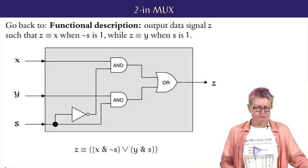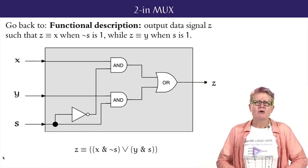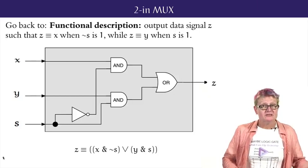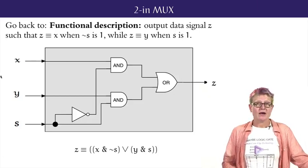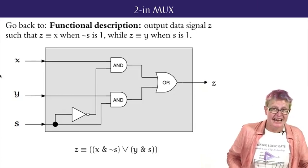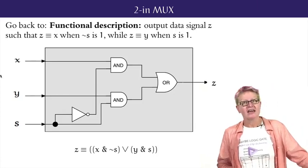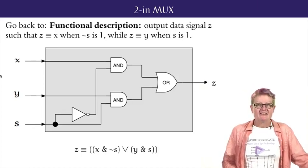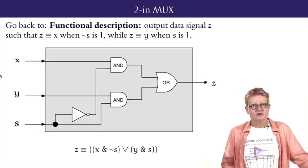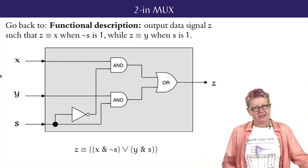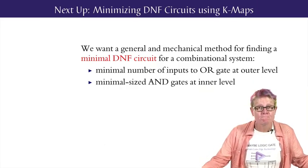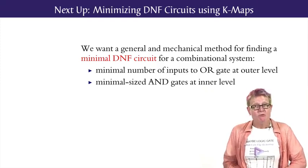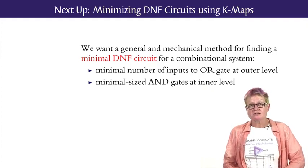Indeed, if we go back to the original functional description, it's easier to see the origins of this final minimal DNF for the 2-to-1 MUX system. Rephrasing the functional description, the output signal Z will be 1 exactly when either input X is 1 and not S is 1, or input Y is 1 and S is 1. The resulting minimal DNF circuit has an outer-level 2-input OR gate and two 2-input AND gates at the inner level. This brings us to the end of this lesson. In the next and final lesson on digital systems, we'll see a general method for finding a minimal DNF circuit for a combinational system.